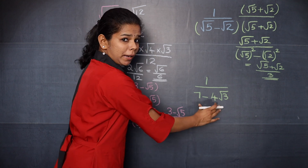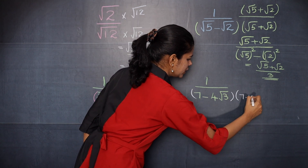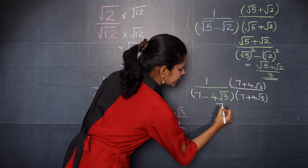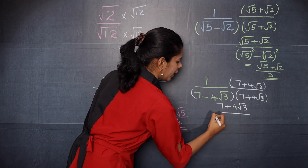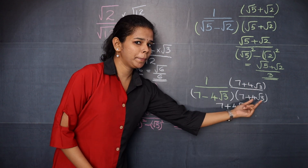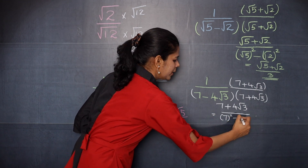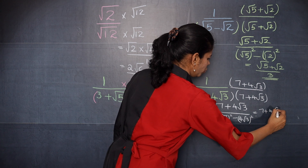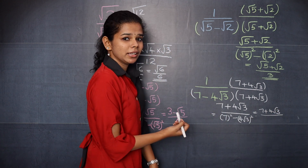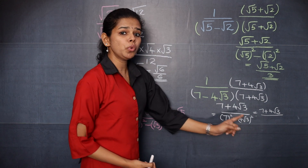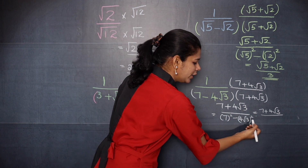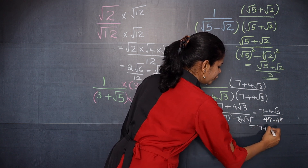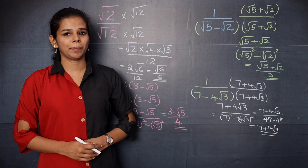Moving on to the next question. You can apply the conjugate here, and the conjugate of 7 minus 4 root 3 is 7 plus 4 root 3. So when you multiply you will get 7 plus 4 root 3 divided by — applying the identity A minus B into A plus B equals A square minus B square. So 7 square is 49 minus 4 root 3 the whole square, which is 4 times 4 times root 3 times root 3 equals 48. So 49 minus 48 is 1, giving the answer as 7 plus 4 root 3.